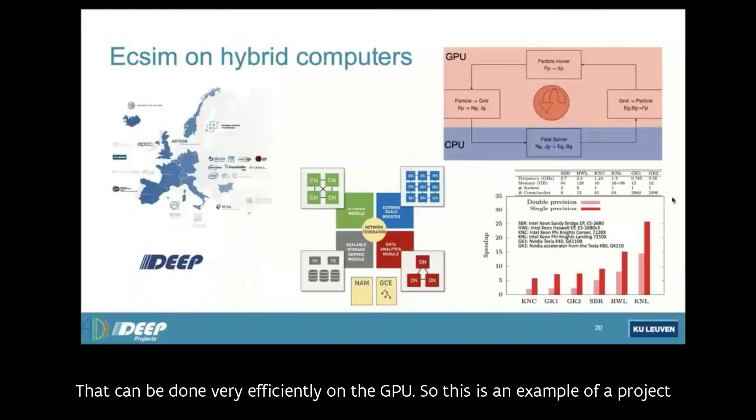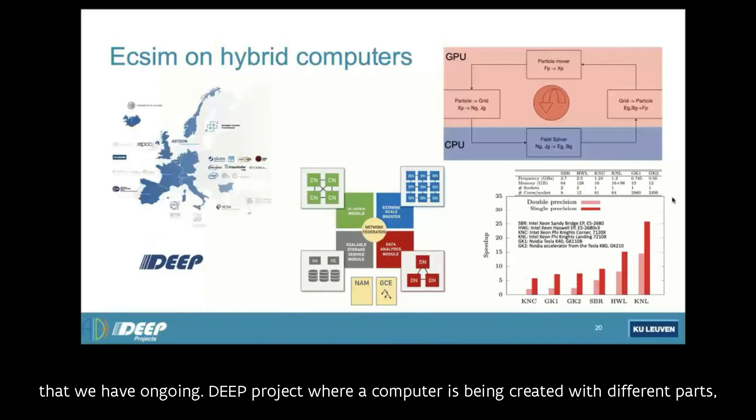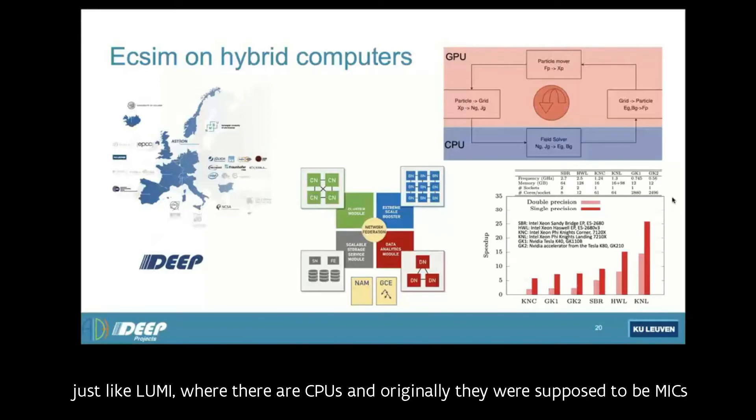So this is an example of a project that we have ongoing, DEEP project where a hybrid computer is being created with different parts, just like Lumi, where there are CPUs and originally they were supposed to be MICs from the Intel Xeon Phi, but then Intel stopped producing them. So we switched to the GPUs. And so we have already experimented on moving this operation that I mentioned to the GPUs.